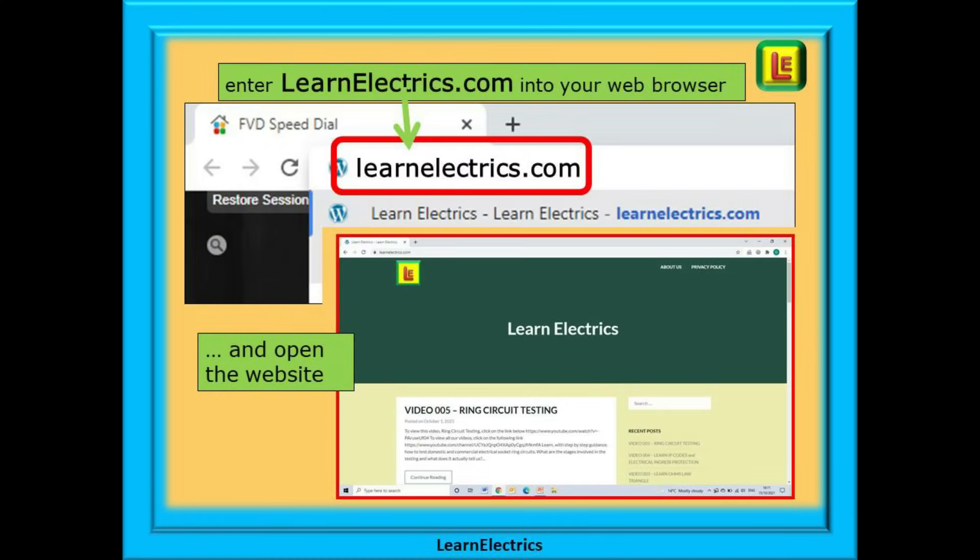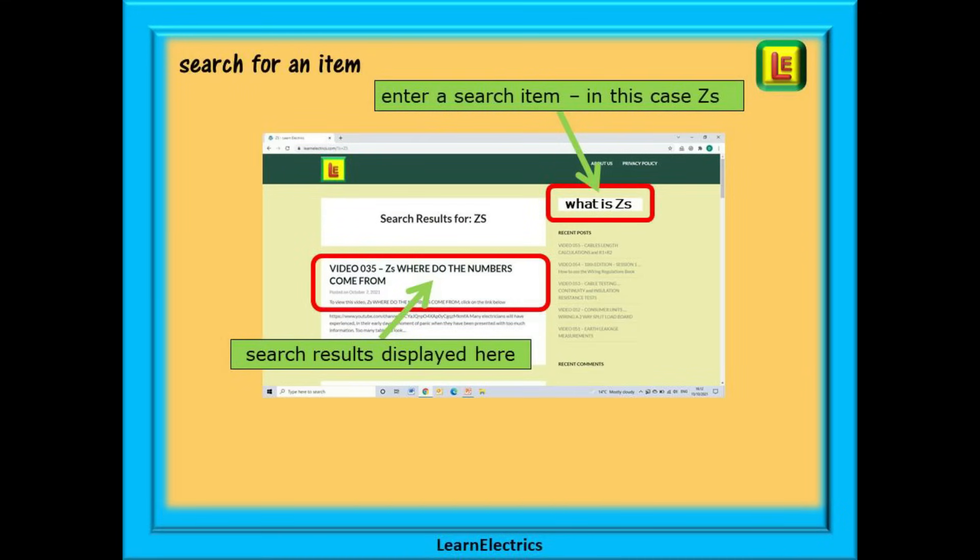At your web browser enter learnelectrics.com into the search bar. Select learnelectrics.com from the choices offered and the website as shown will open up for you. You now have a couple of choices. You can search for a help item or any video by entering a keyword into the search bar on the right. Click on return and all the help files and videos with that word in the title will be listed for you. They will be shown with a short description and each video listed will have a link shown that will take you directly to that exact YouTube video.